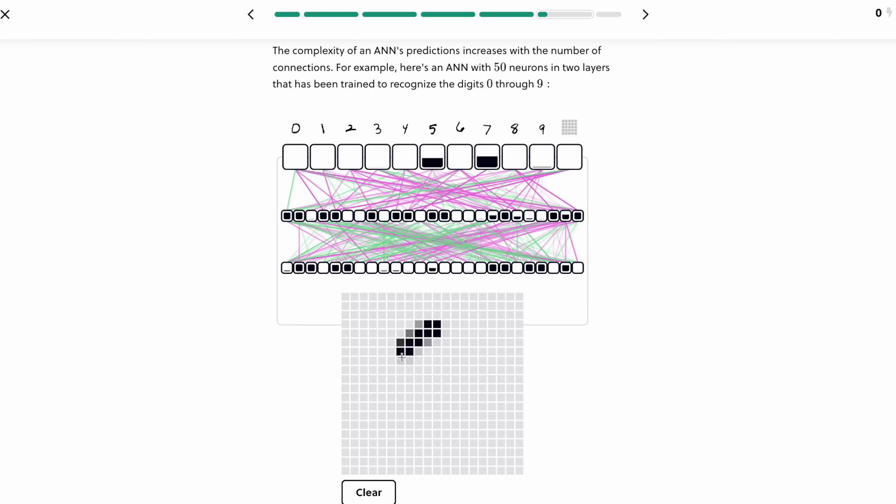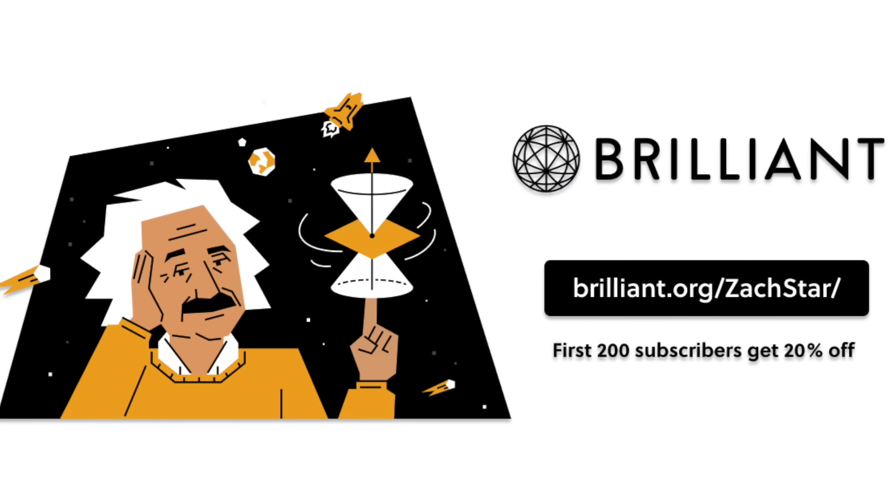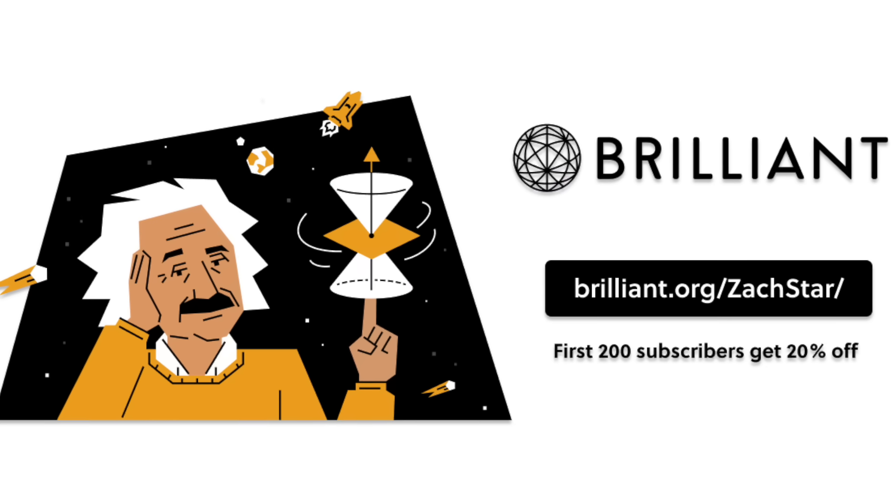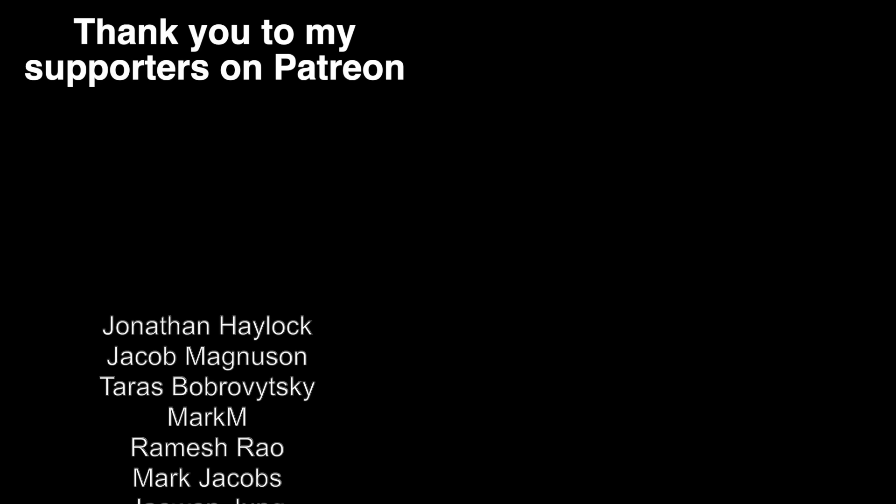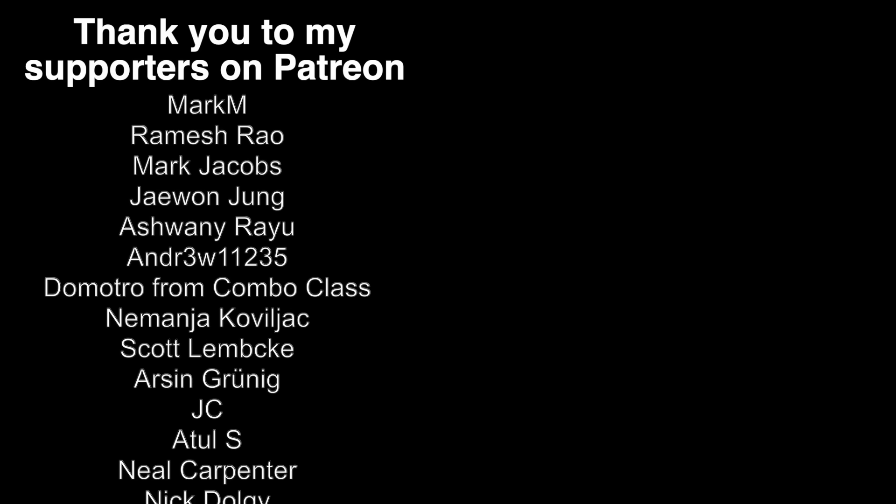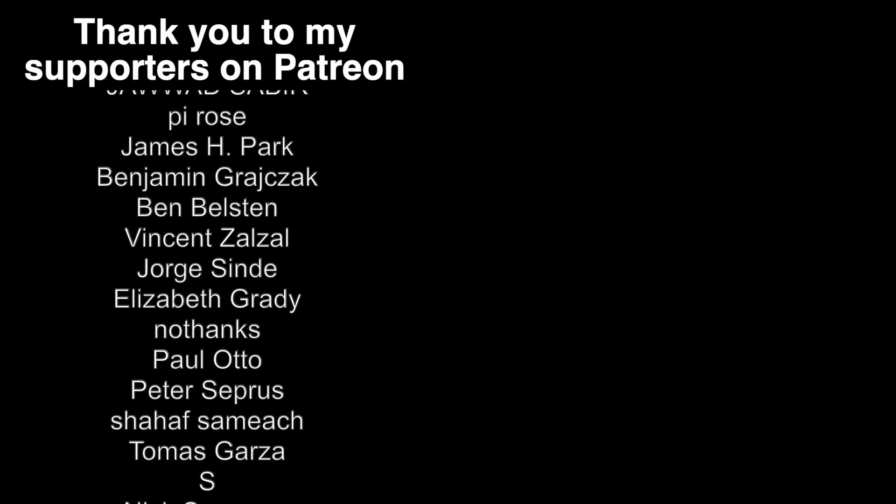And you can now try everything Brilliant has to offer free for a full 30 days. Just go to brilliant.org slash Zach Starr or click the link in the description below. Plus, the first 200 of you to sign up will get 20% off Brilliant's annual premium subscription. With that, I'm going to end that video there. Thanks as always to my supporters on Patreon, social media links to follow me are down below, and I'll see you all in the next video.